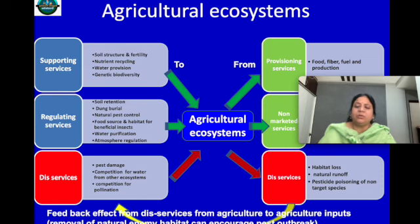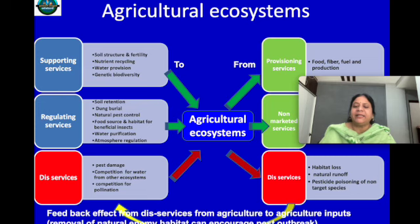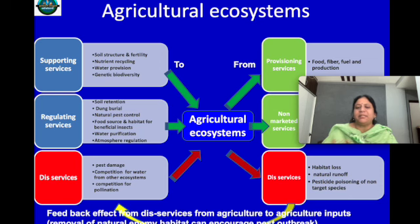The agricultural ecosystem can also express disservices like pest damage, competition for water from other ecosystems, and competition for pollination. These disservices are expressed because of habitat loss, natural runoff, and pesticide poisoning of non-target species. We have to understand all activities of the agricultural ecosystem — what supporting, regulating, and non-marketed services it gives, and when disturbed, what disservices it can give — by considering agriculture as a complete ecosystem.